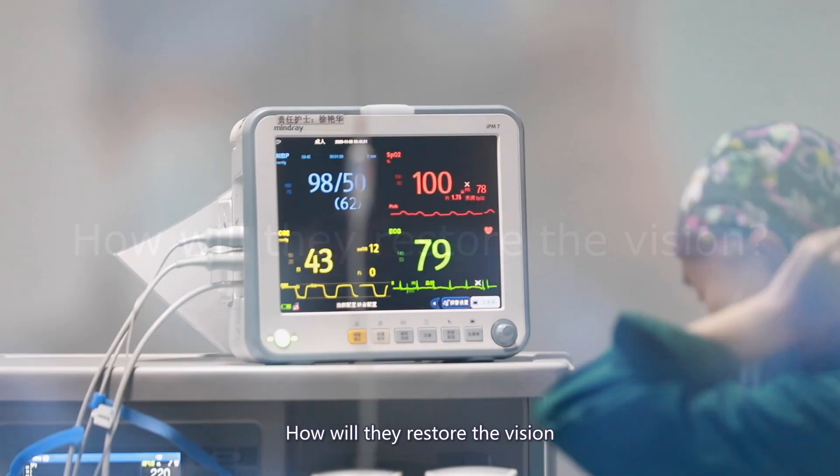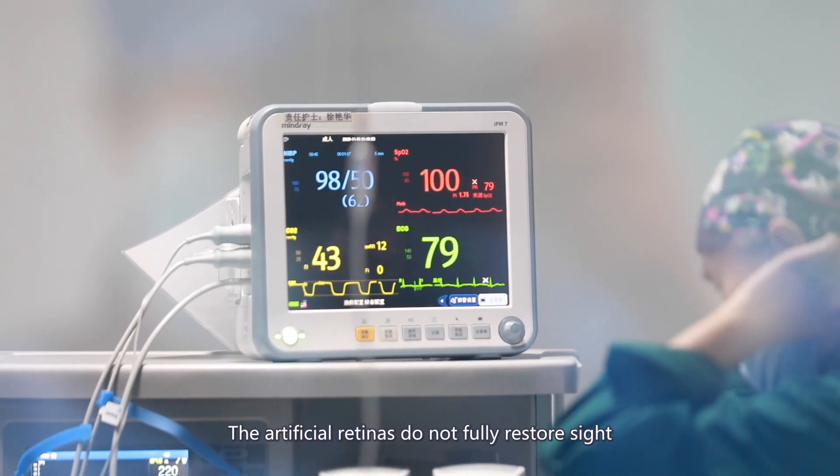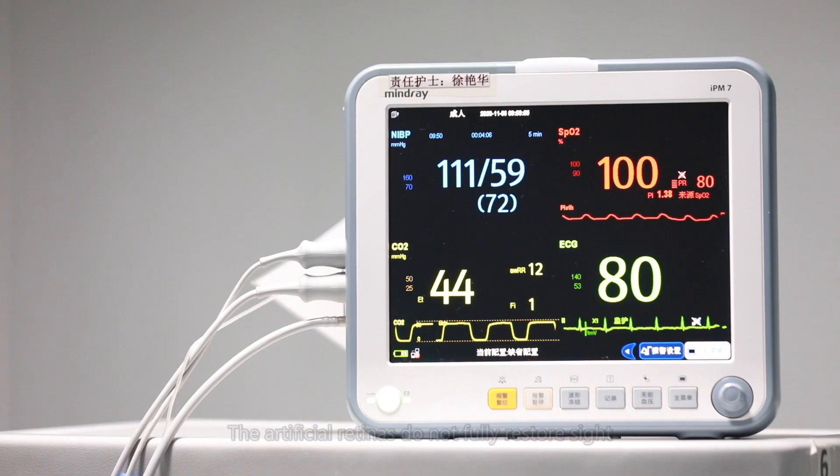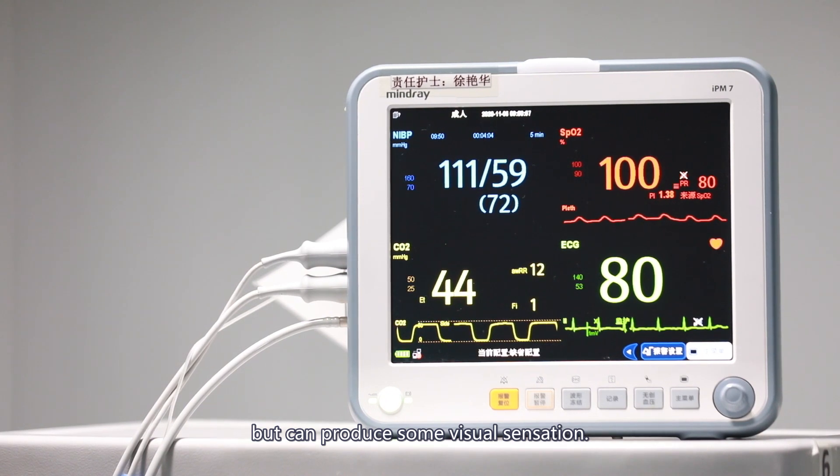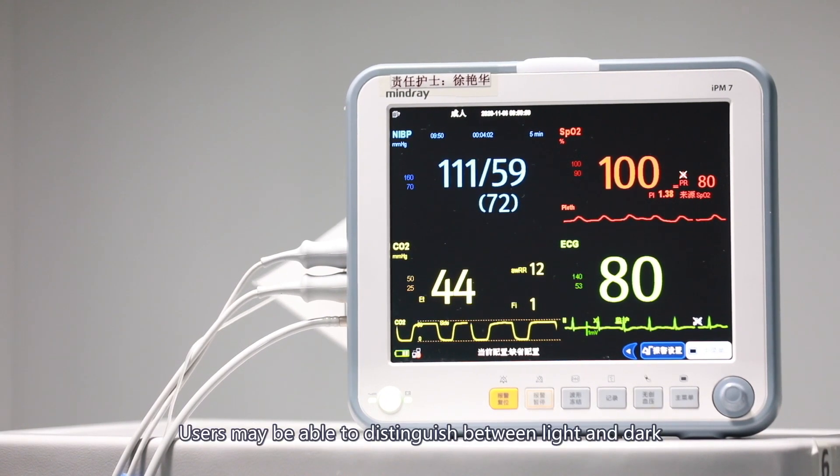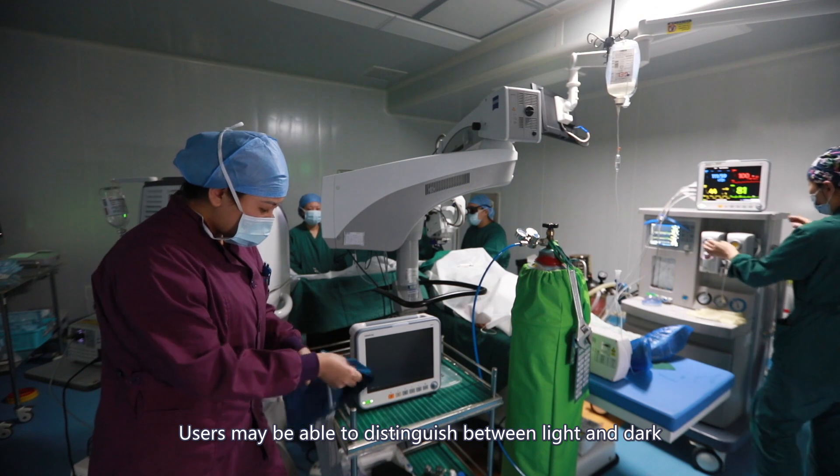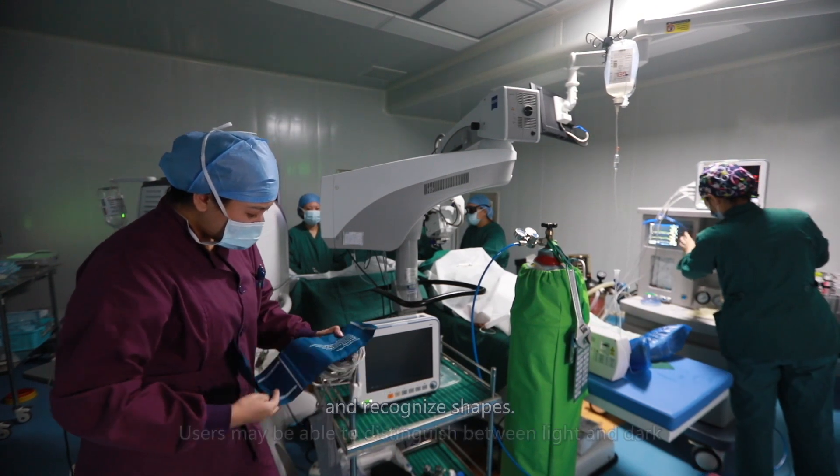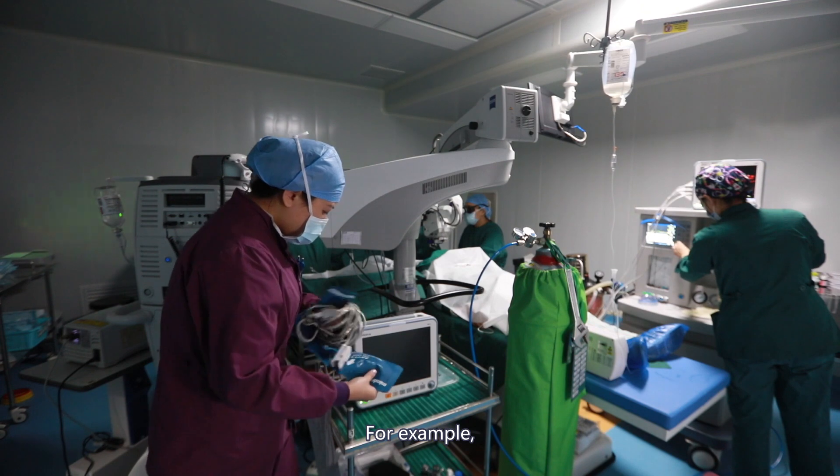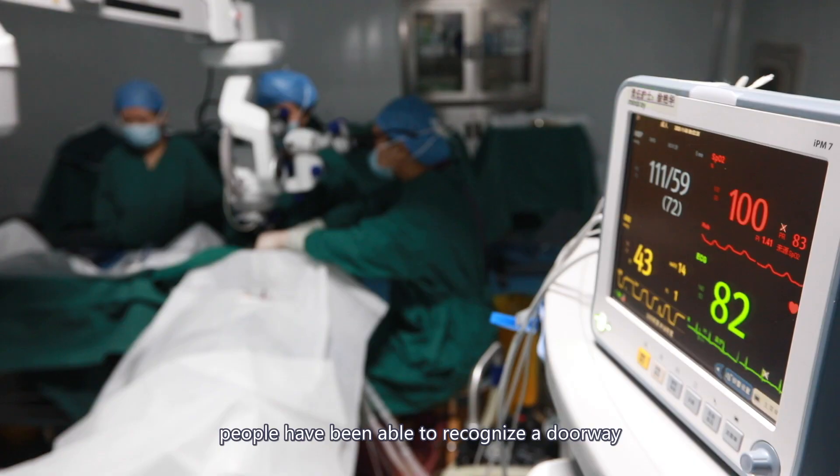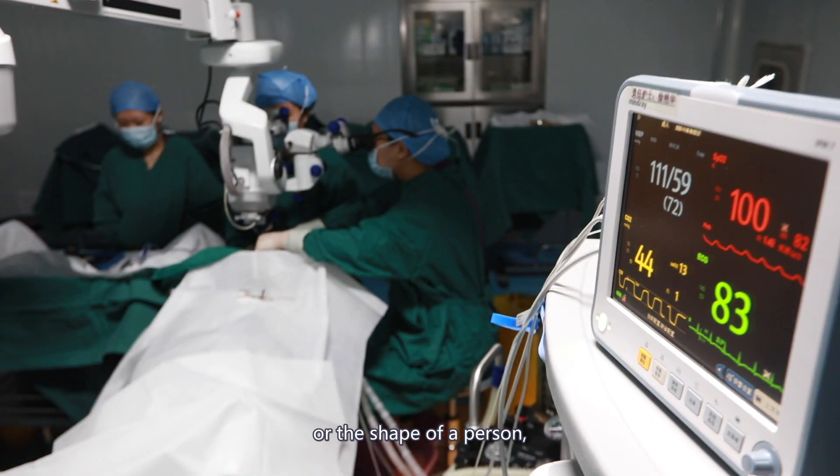How will they restore vision? The artificial retinas do not fully restore sight but can produce some visual sensation. Users may be able to distinguish between light and dark and recognize shapes. For example, people have been able to recognize a doorway or the shape of a person.